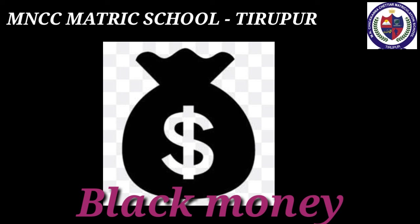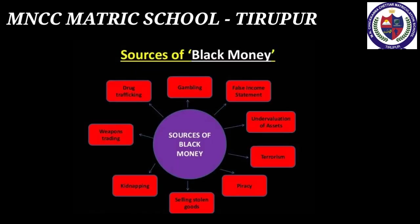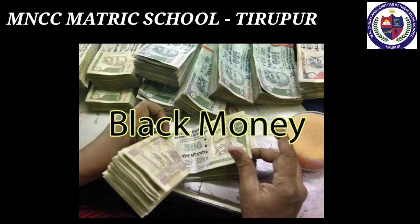Black money is any money on which tax is not paid to the government, earned through illegal activities. It is accumulated by criminals, smugglers, hoarders, tax evaders, and other anti-social elements of society. Effects of black money on the economy include: dual economy, tax evasion undermining equity, widening gap between rich and poor, lavish consumption spending, distortion of production pattern, distribution of scarce resources, and effects on production.